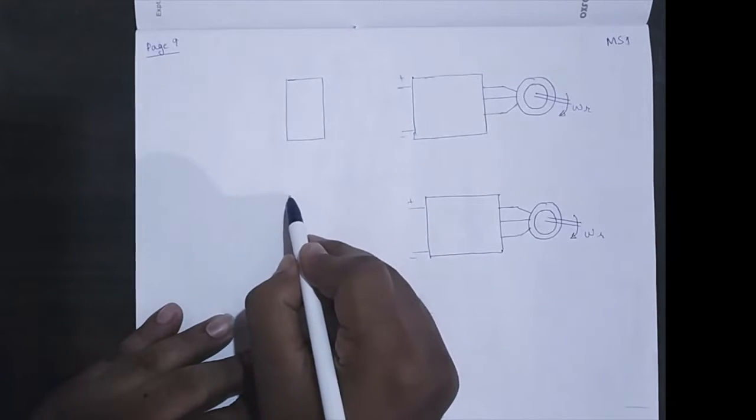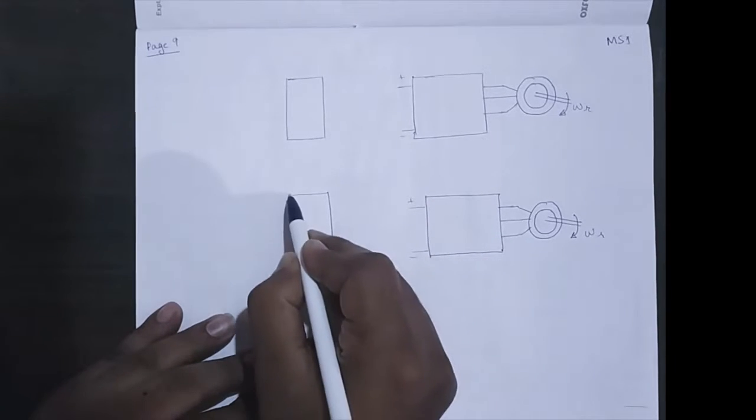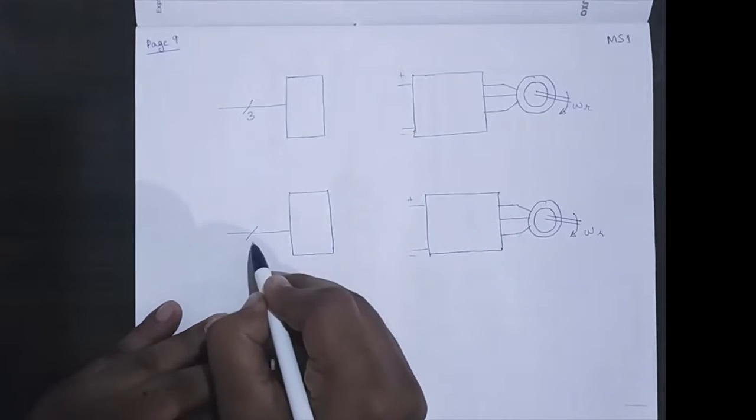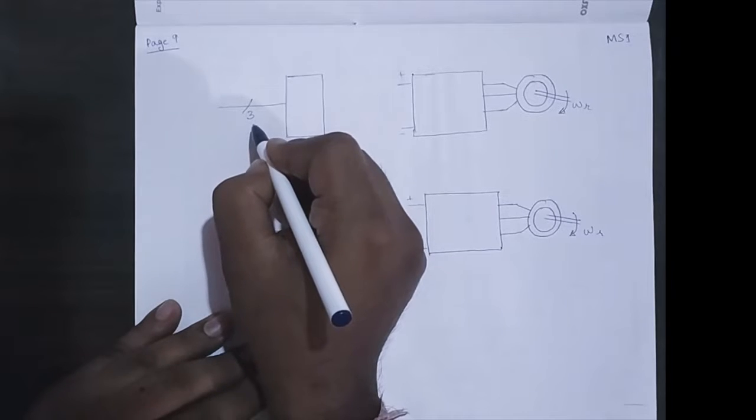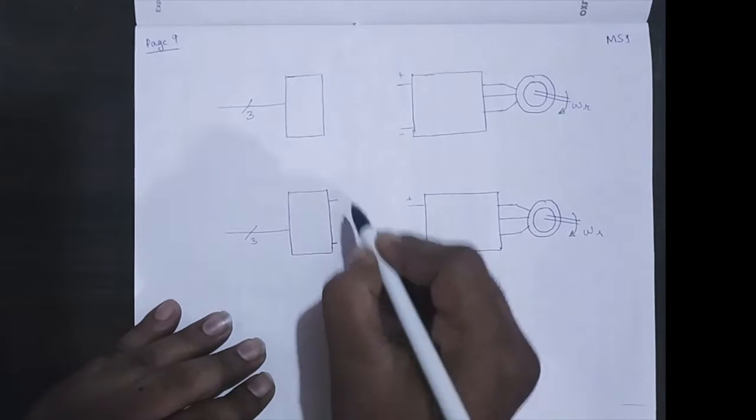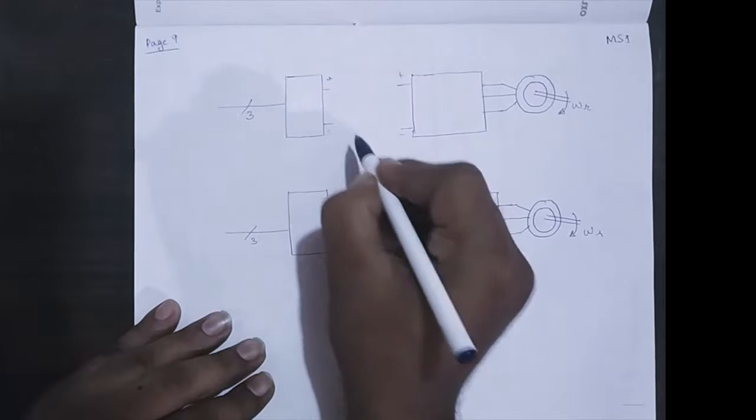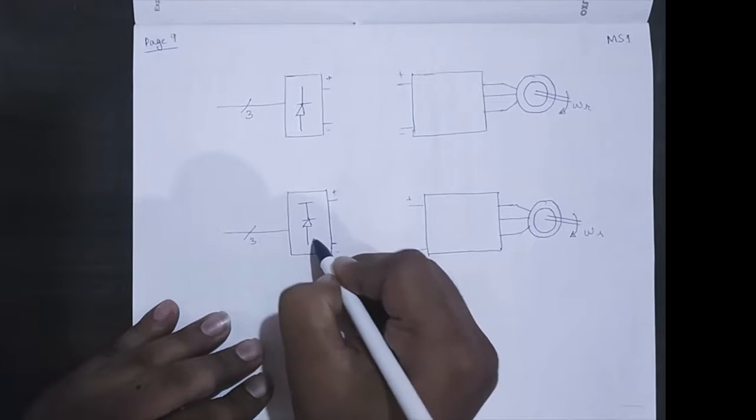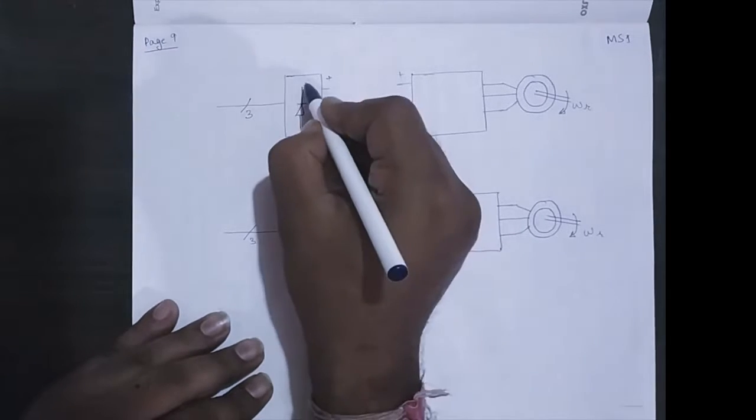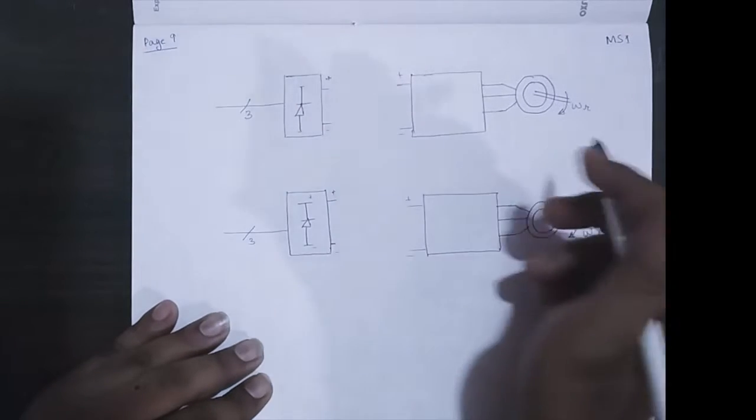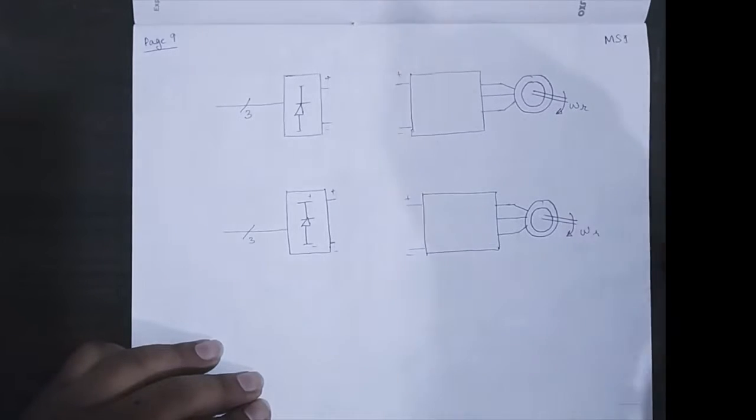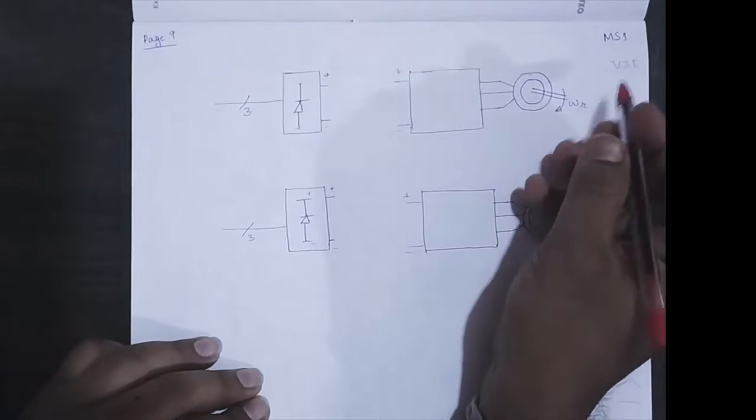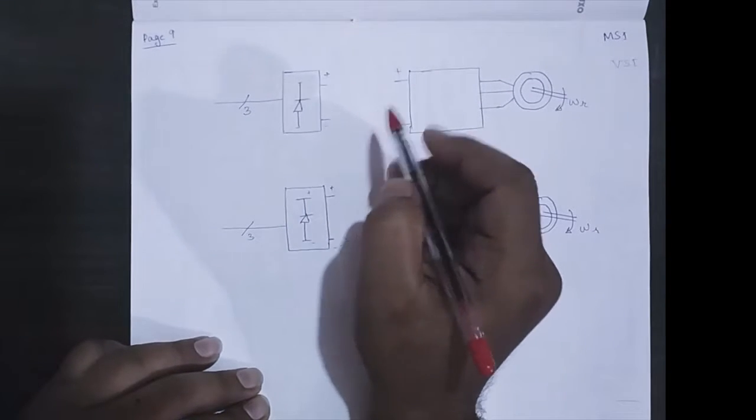Let us consider another converter that will convert the normal grid supply AC to DC. This side is AC and this side is DC. The converter is made up of a diode, a three-phase rectifier diode.